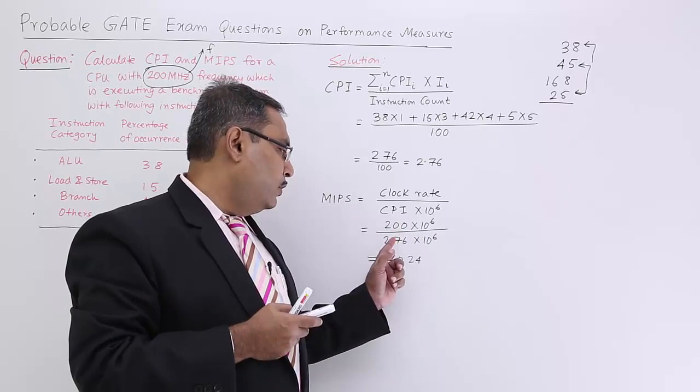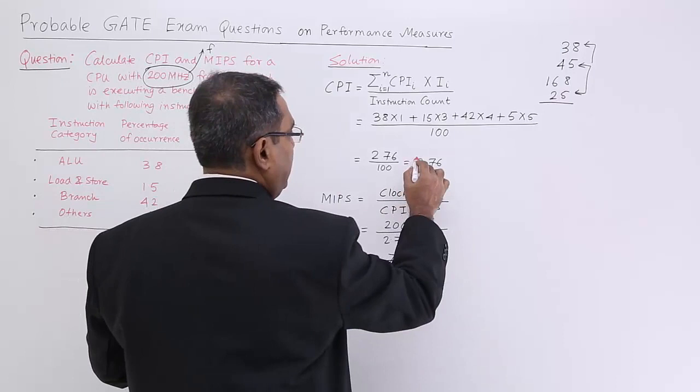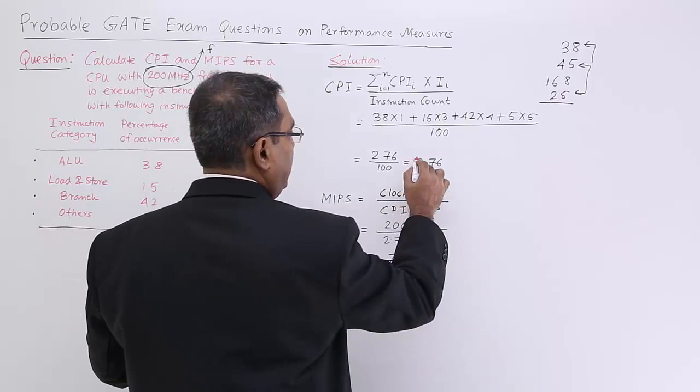10 to the power of 6 will be there, and then if you go on doing it is 70.24. Here we have got 2 answers for the CPI and for the MIPS. This sort of questions are very much probable in your coming exams. Please check them. Thanks for watching.